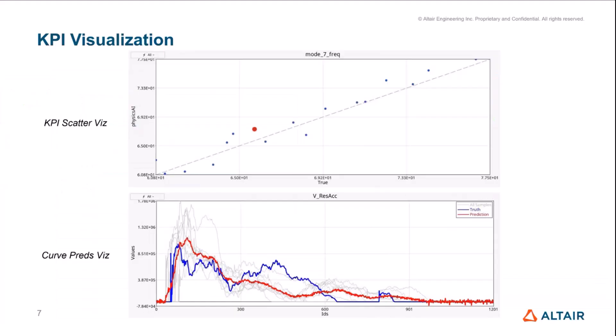The KPI visualization has also been improved. Now we have two different types of visualization. Depending upon whether the KPI is a scalar value, we can either display a scatter plot. Or if it's a time-dependent response or a vector value, we actually display the curves. Not only that, we display the distribution of the KPIs for all the test points so that all of them can be compared simultaneously at one point in time.